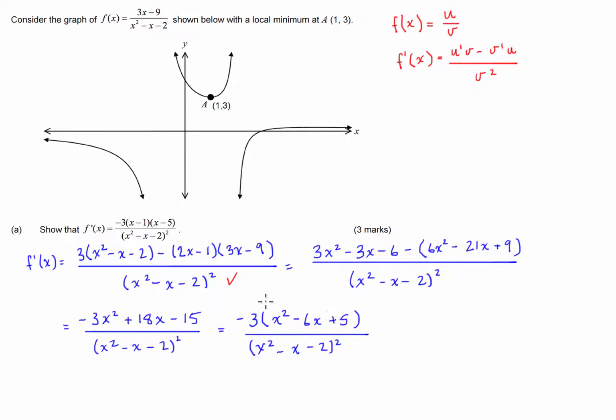Now from here, I'm going to just do a monic quadratic factorization, so we're just going to put this into two brackets. So this is going to be negative 3. These add together to give negative 6, multiply together to give positive 5. The only two things we can have is negative 1 and negative 5, so we have x minus 1, x minus 5, divided by x squared minus x minus 2, all squared.